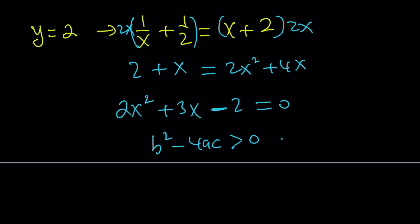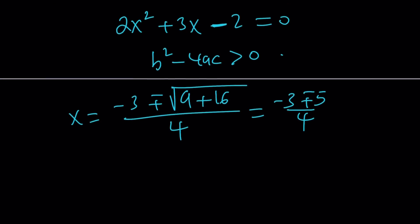Let's solve it. x equals negative b plus minus the square root of b² minus 4ac. That's going to be 9 plus 16 is 25, which gives me a 5. So it's -3 ± 5 over 4. Negative 3 plus 5 is 2 over 4, which is 1/2. That's one of the solutions, and the other one is going to be -2.